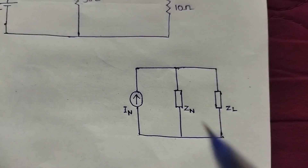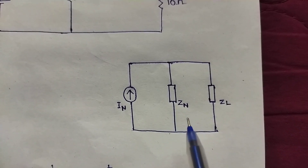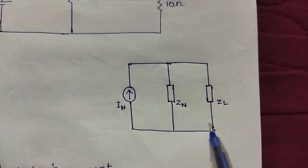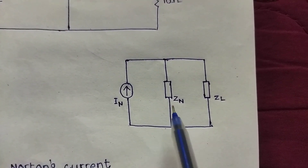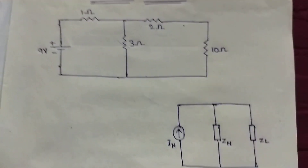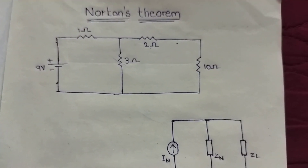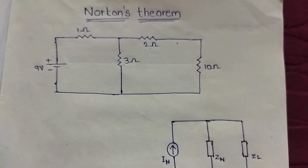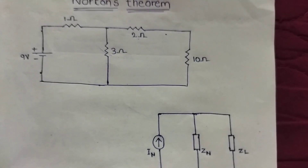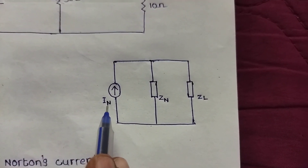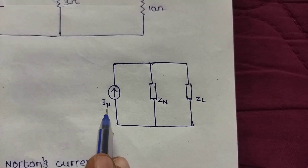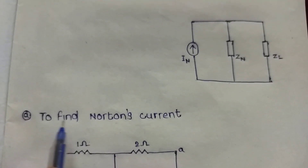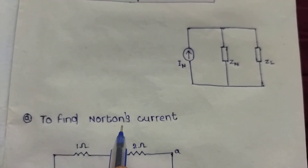After analyzing the complex circuit, we will find the equivalent circuit. First, we will find Norton's current. The first step is to find Norton's current.